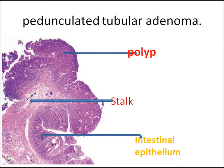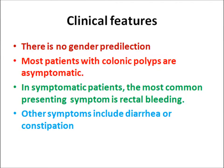In pedunculated tubular adenoma, there is a fibrovascular stock covered by tubular structures in the lamina propria. At the base there is normal intestinal epithelium. There is no gender predilection. They are mostly asymptomatic but may present with diarrhea, constipation, or rectal bleeding.